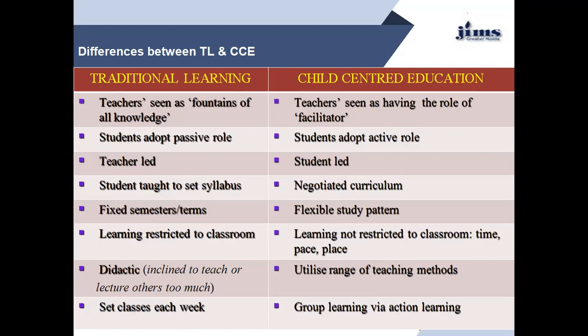In traditional learning, learning is restricted to the classroom. In child-centered education, learning is not restricted to the classroom — it varies by time, place, and pace. In traditional learning, there are set classes each week. In child-centered education, there is group learning via action learning.